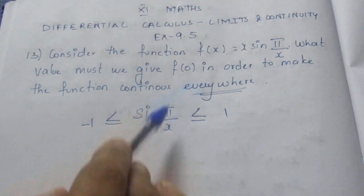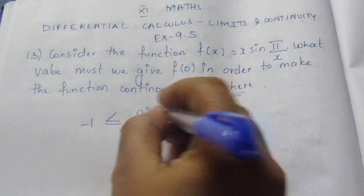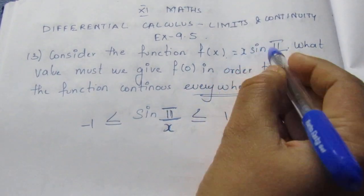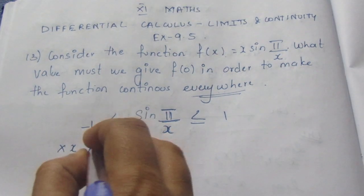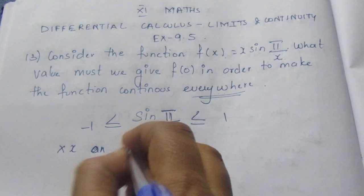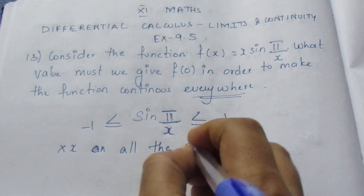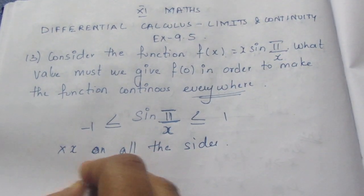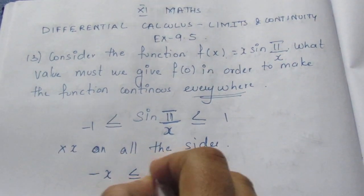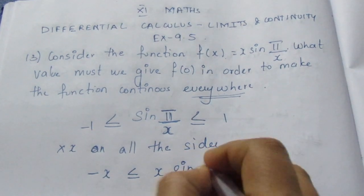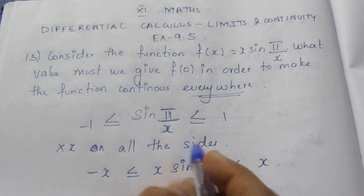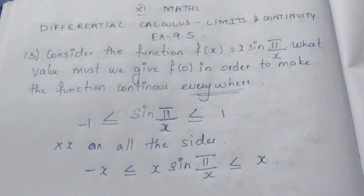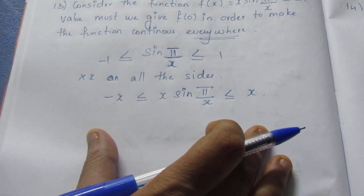So for f(x) = x sin(π/x), if we multiply by x on all sides, we get: -x ≤ x sin(π/x) ≤ x.